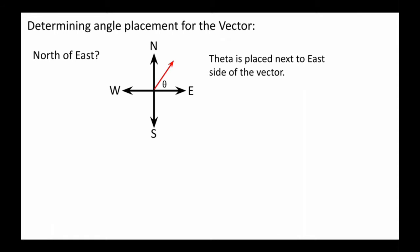In other words, you would place that theta between the vector and the last coordinate compass direction. Here's another example: west of north. We would place the vector on the north side, but the angle would be next to north, between the vector and the north side.